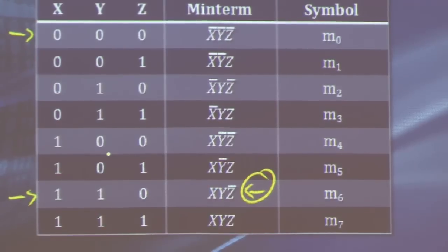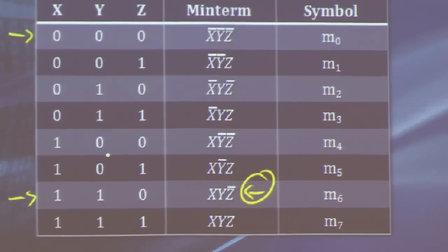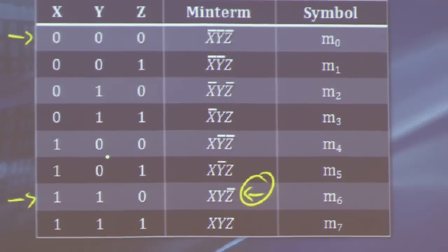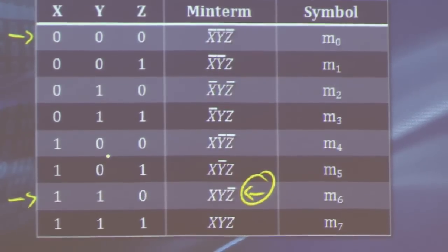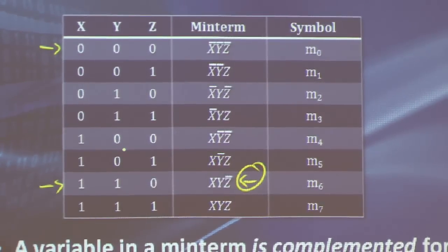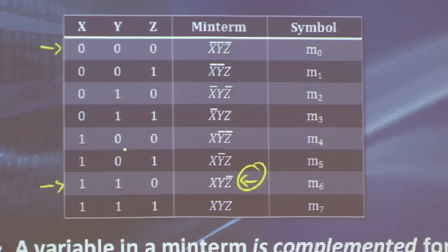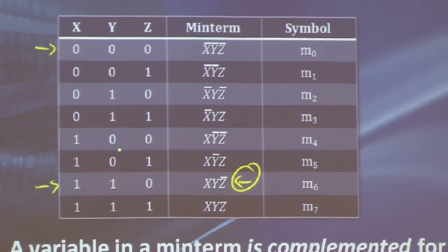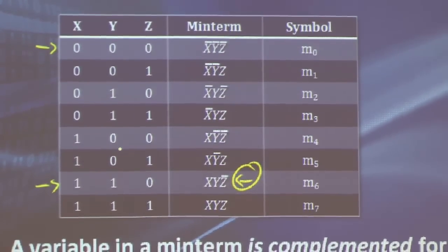Order has quite an importance for minterm indices. If I shuffled around the order of x, y, and z, the indices would no longer correspond to the same numbers. As a convention, we usually use the alphabetical order of the letters, starting from the first letter and going down the alphabet. If we deviate from this order, we specify what order our minterms are in.